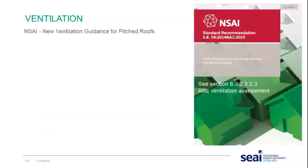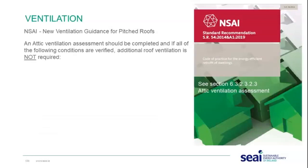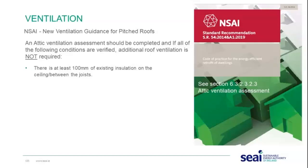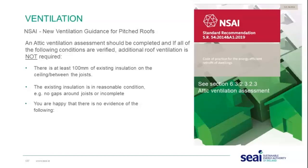SR 54 includes new ventilation guidance for pitched roofs: an attic ventilation assessment should be carried out, and additional roof ventilation is not required if all of the following conditions are met — at least 100 millimetres of existing insulation on the ceiling between the joists, the existing insulation is in good condition with no gaps around joists or incomplete sections, and there is no evidence of mould, moisture, or large droplets of condensation. If all conditions are met, no additional roof ventilation is required as per SR 54:2019.